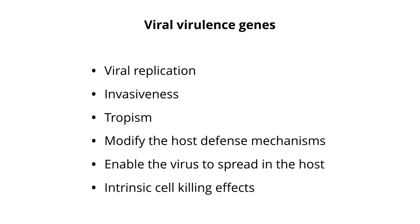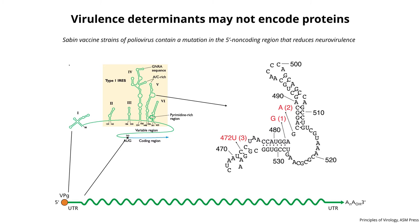The result of doing these kinds of experiments for many years is that we have viral virulence genes in several classes: genes affecting virus replication specifically in the host, genes involved in invasiveness, genes that control tropism, genes that modify host defenses — the innate, intrinsic, and adaptive antagonism genes — genes that enable virus to spread in the host, and genes with intrinsic cell-killing effects operative in an animal but not in cell culture.